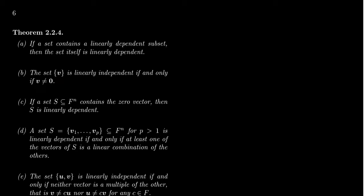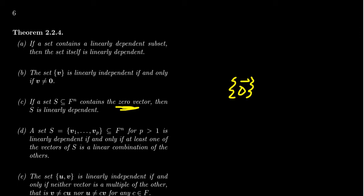If you combine those principles: if a set contains the zero vector, that's a dependent set. And if a set contains a dependent set, it's dependent. So any set of vectors that contains the zero vector is automatically dependent. That's an important thing to remember.